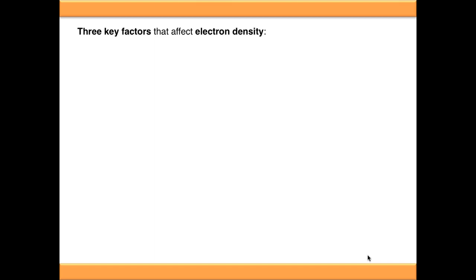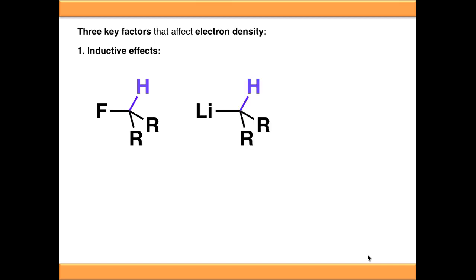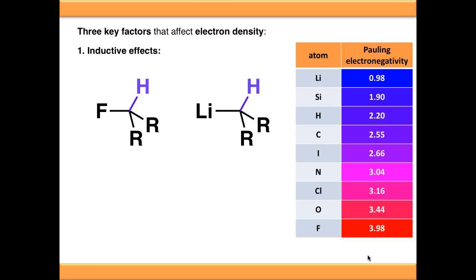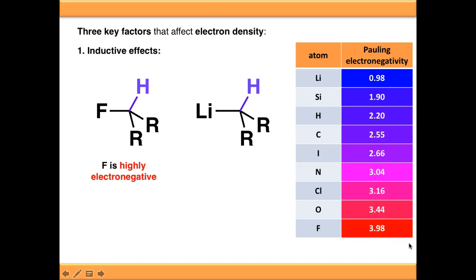The three key factors affecting electron density and whether nuclei are shielded or deshielded: first, inductive effects. This is to do with pulling electron density through sigma bonds from electronegative or electropositive atoms. Looking at the hydrogen in purple and comparing two molecules — one with a fluorine substituent, one with a lithium substituent — lithium has an electronegativity of 0.98 and fluorine is the most electronegative element at 3.98. Fluorine is going to pull electron density through the carbon-fluorine bond and through the carbon-hydrogen bond, having the effect of deshielding that nucleus and moving it to higher ppm.